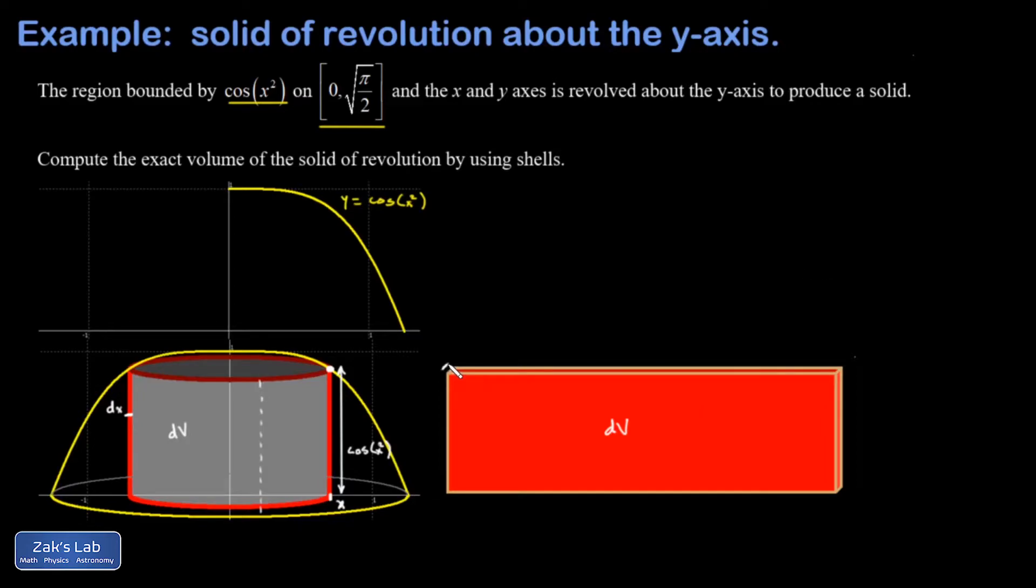So the thickness of the shell, again that was dx, the height of the shell, that was cosine of x squared, and the length of the shell, that's the circumference of the shell when it was rolled up and that's 2 pi times x.